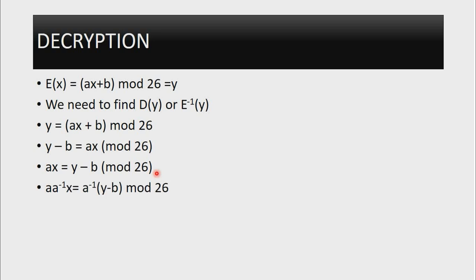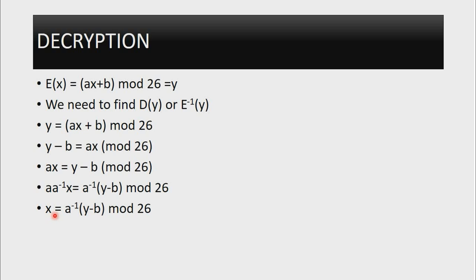The next thing is to eliminate A. To do so, we multiply both sides by the inverse of A. When you multiply something by its inverse, it gives us 1. So we are able to eliminate A, giving us X = A⁻¹(Y - B). The A inverse acts on the entire right-hand side, meaning we have arrived at the original plaintext. So the decryption of Y is simply D(Y) = A⁻¹(Y - B) mod 26, and by doing so we have derived the decryption formula.